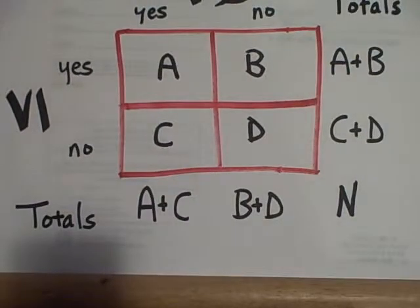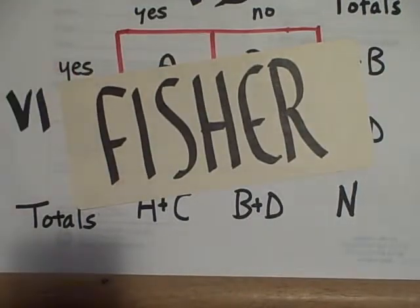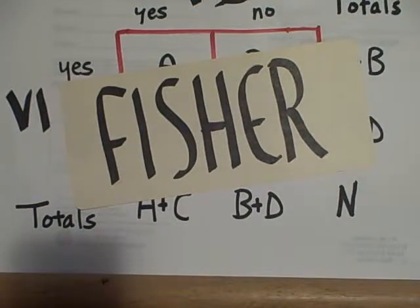Let's take a look at some alternatives to chi-square. Going back to the two-by-two contingency table, is there a better test to use in that kind of situation? Yes — it's called the Fisher Exact Probability Test. Most people didn't use it in the past because it was very difficult to calculate, but now computers can do that for us.